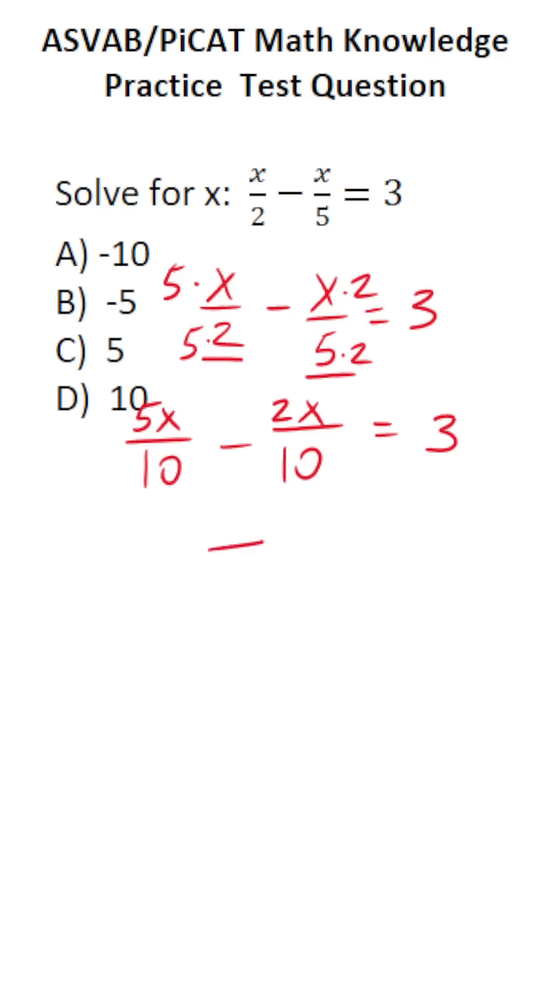Now that we have a common denominator, that's not going to change. That said, we can subtract our numerators now, so this becomes 5x minus 2x. 5x minus 2x is going to be 3x over 10 equals 3.